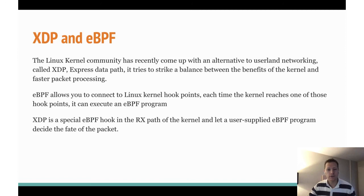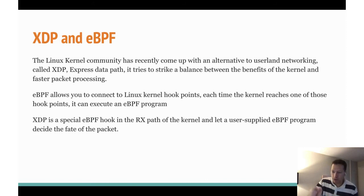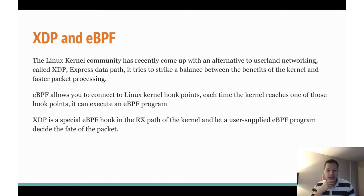XDP is the hook point for the Linux networking stack. It sits very early on in the receive path of the kernel, and it allows a user-supplied eBPF program to decide the fate of the packet. You attach this eBPF program typically to the driver, so as soon as the packet comes out of the driver — and this is important — before an SKB is created. An SKB is a socket buffer object in the Linux kernel that gives you lots of functionality, but from there on it gets a little more expensive. So XDP happens before that, and you have access to the raw packet.